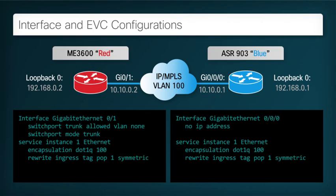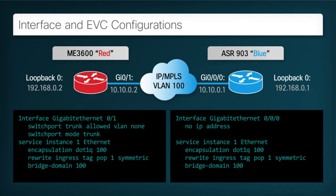Then we need to assign a Bridge Domain to this Ethernet service. The BDI will be the structure which we use to configure the IP characteristics. In this case, we use a BDI with the same number as the VLAN tag. This isn't necessary, but it is a convenient convention. This CLI instructs the machine to create either a BDI 100 or a VLAN 100 device, which we will configure in the next step. Finally, we should ensure the interface is taken out of shutdown.